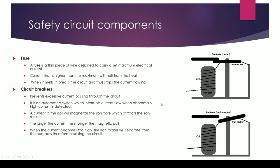Well, a current in a coil will magnetize the iron core which attracts the iron rocker. Through the concepts of electromagnetism, the iron core will become magnetized. It'll become a magnet.